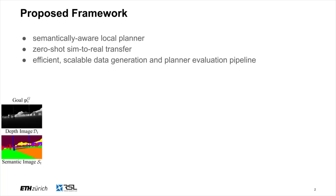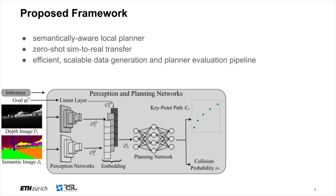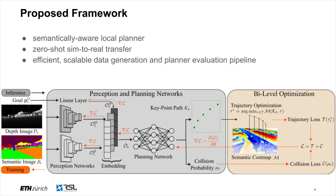In this work, we introduce a semantically aware Local Planner and showcase zero-shot transfer from simulation to reality. We also provide an efficient and scalable data generation and planner evaluation pipeline. Our method encodes goal position as well as depth and semantic input. The planner then predicts a coarse keypoint path and a collision probability. The path is optimized over a differentiable semantic cost map, and together with the network update, this forms a bi-level optimization process.